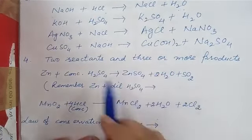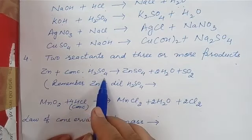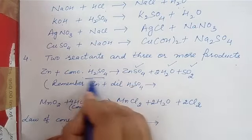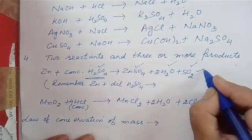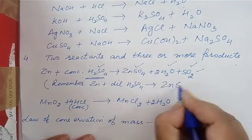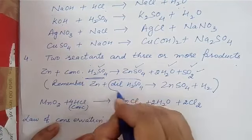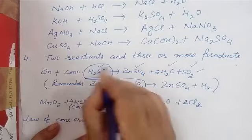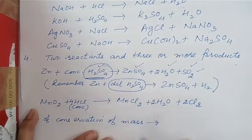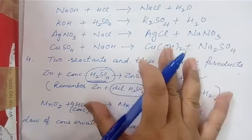The last type is two reactants giving three or more products. For example, zinc reacts with concentrated sulfuric acid to give zinc sulfate, water, and sulfur dioxide — three products. Remember: it is concentrated sulfuric acid that gives three products, whereas when zinc reacts with dilute H₂SO₄ it gives only two products — zinc sulfate and hydrogen. Next, manganese dioxide reacts with hydrochloric acid to give manganese chloride, water, and chlorine gas — again three products.